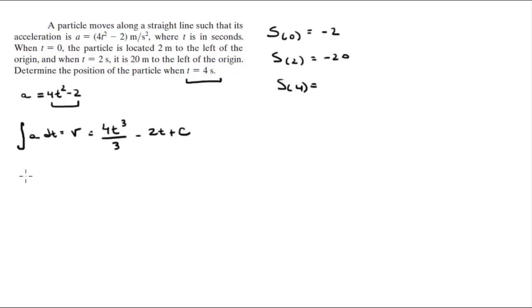Then you know that the integral of the velocity with respect to time is equal to the position. So I'm going to integrate this whole thing. Now remember, c is a constant. So this comes out to be 4t to the 4 over 12, minus t squared, plus c times t, plus another constant, let's call it d.